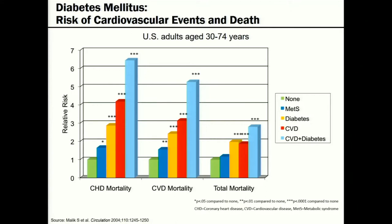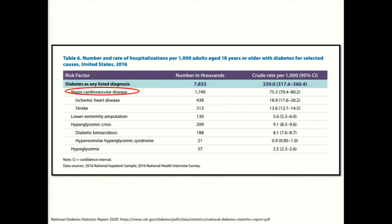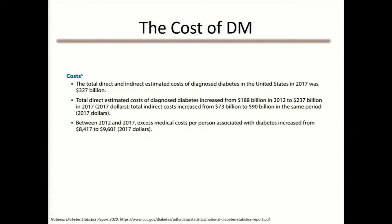The number one cause of hospitalizations in diabetes is major cardiovascular disease — this is why we have such high morbidity and mortality in diabetic patients. And the cost: when last examined in 2017, the cost of diabetes was 327 billion dollars. If we could focus resources on fixing one disorder, I think it should be diabetes — though I may be biased as an endocrinologist.